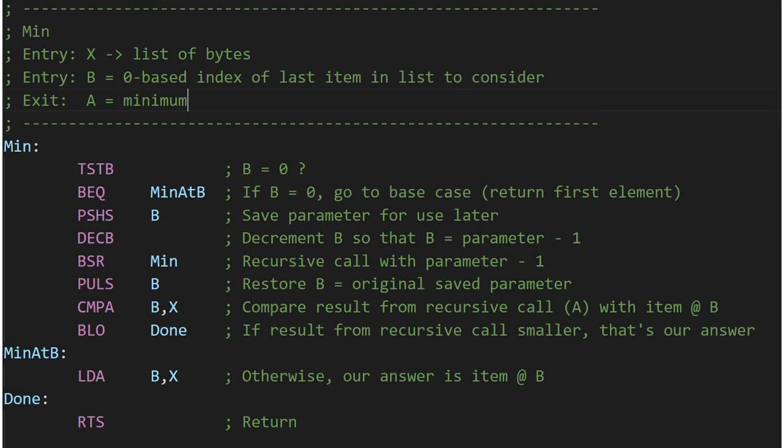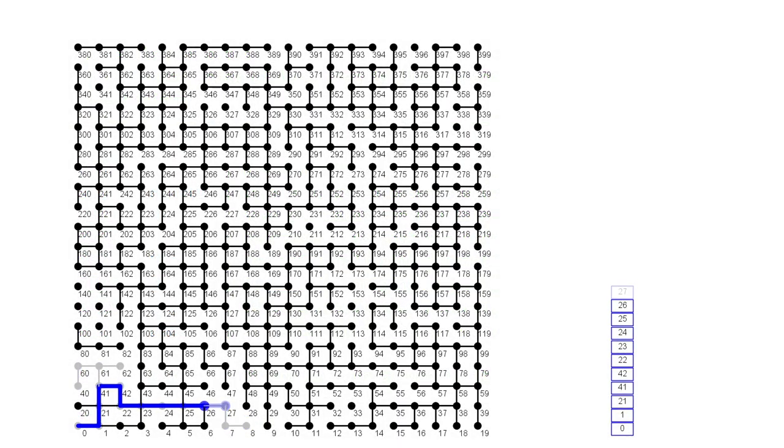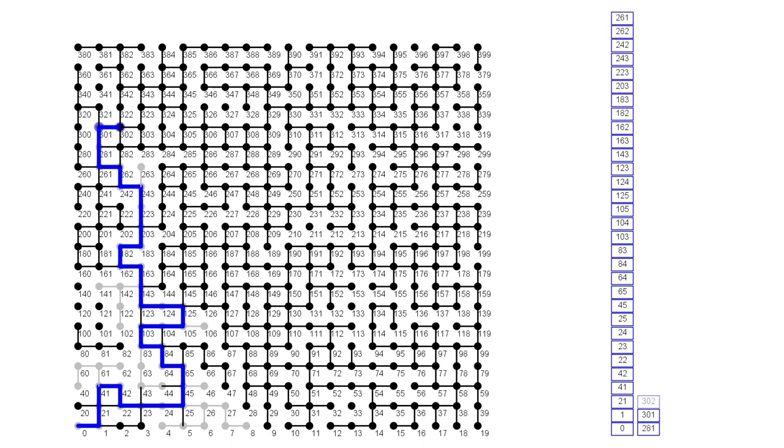If this was all too easy for you, here's a quick puzzle. What if you wanted to write a routine that found the largest item from a list instead of the smallest? What is the tiniest change you could make to this original code to achieve that? For the answer, the code used in this video, and also another bonus assembly language recursive routine, see the link in the description.